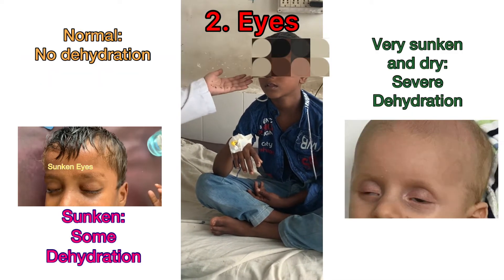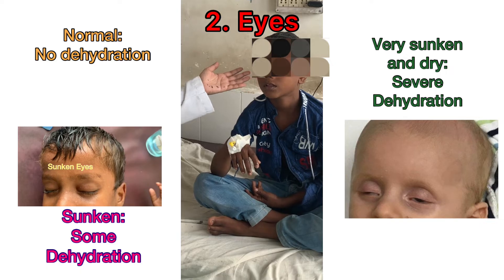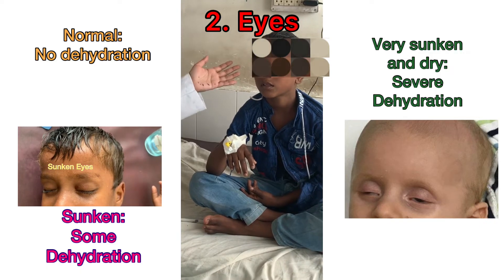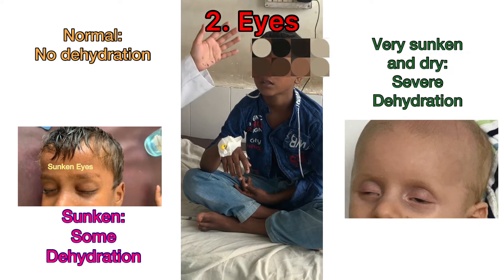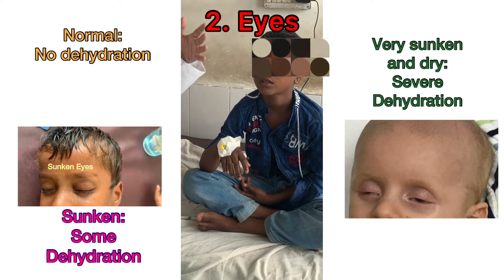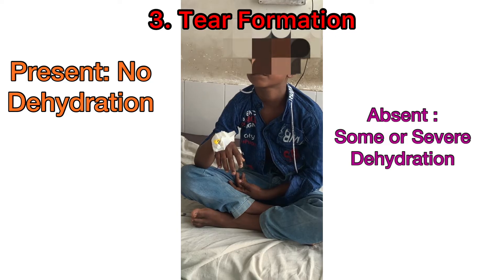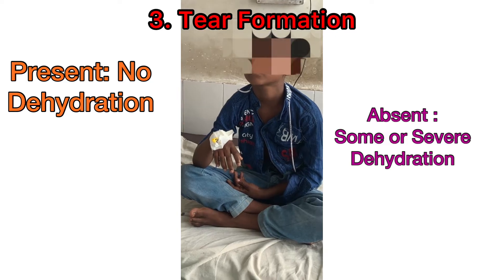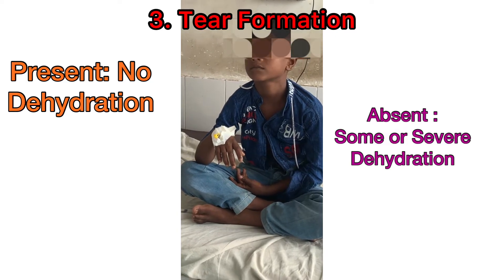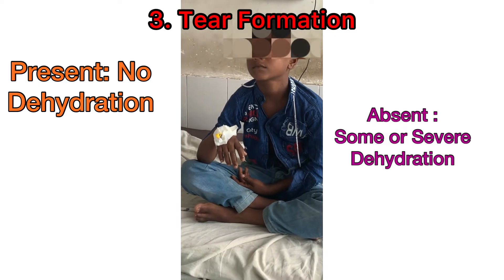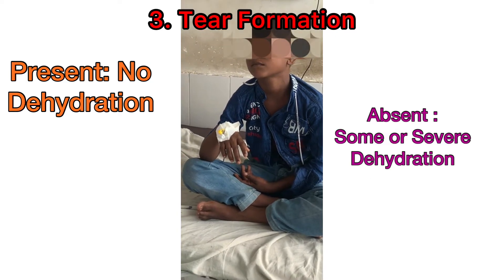Then, look at the eyes of the patient — if they are looking normal, or they are looking sunken or very sunken and dry. In a younger patient, you can also look at the tear formation, if it is present or absent.